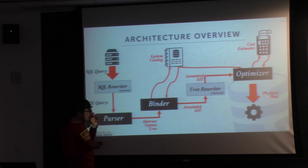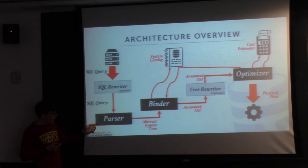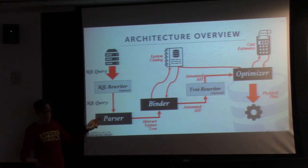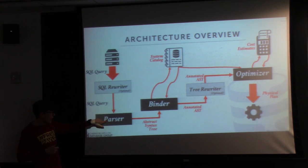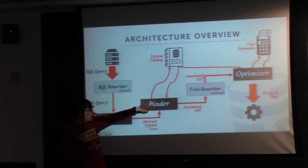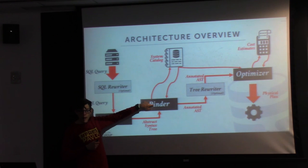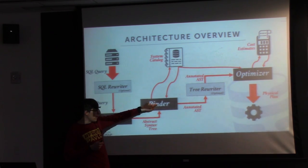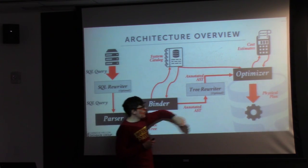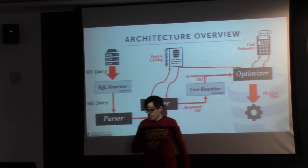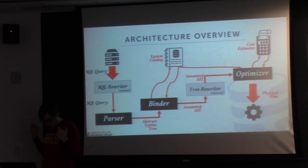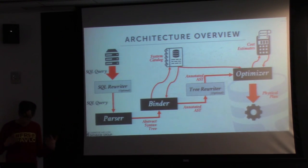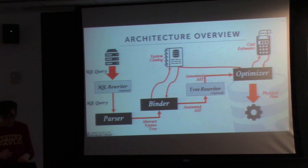In our current system, we have a parser from a system called HiRise, but it turns out it implements SQL incorrectly, so we're replacing it with the Postgres parser. Patrick and his team just wrote the new binder for our database system, Peloton, so we can now pull things from the catalog and get annotated ASTs. Patrick's team is also implementing the new optimizer. This is actively being worked on right now, which is why I'm interested in spending three days on it.